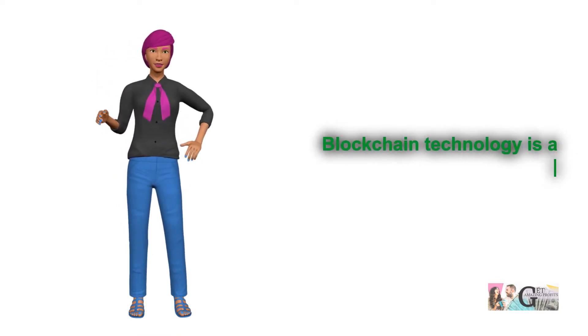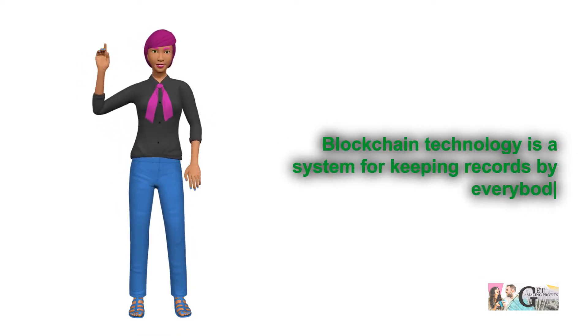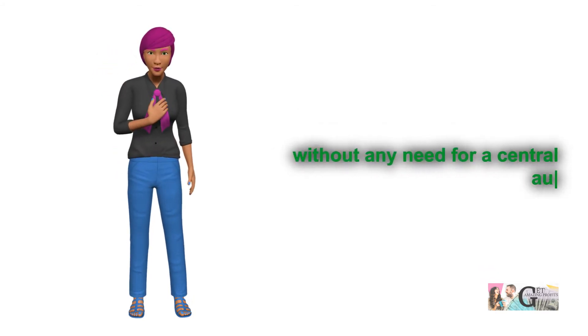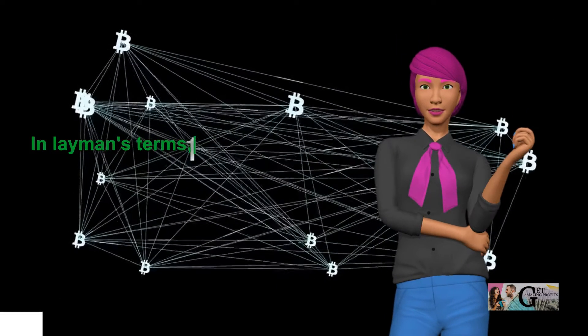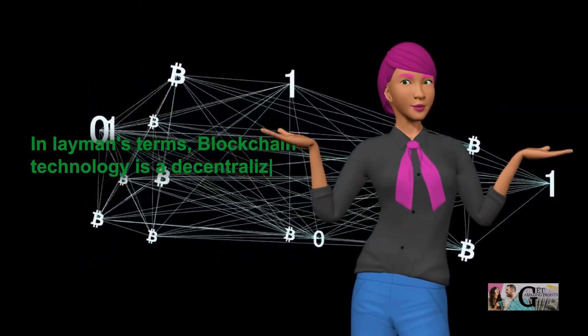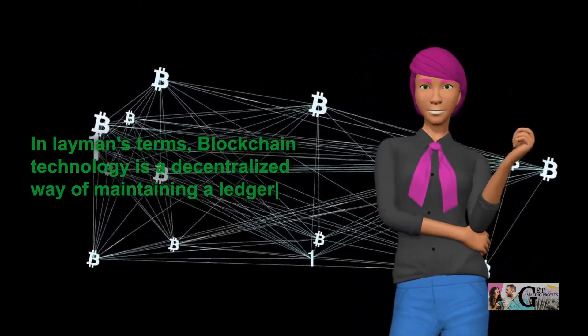Blockchain technology is a system for keeping records by everybody, without any need for a central authority. In layman's terms, blockchain technology is a decentralized way of maintaining a ledger that is practically impossible to falsify.